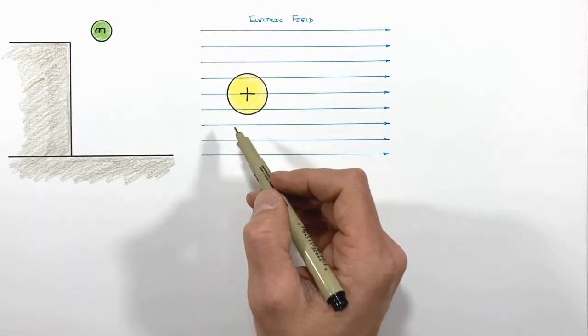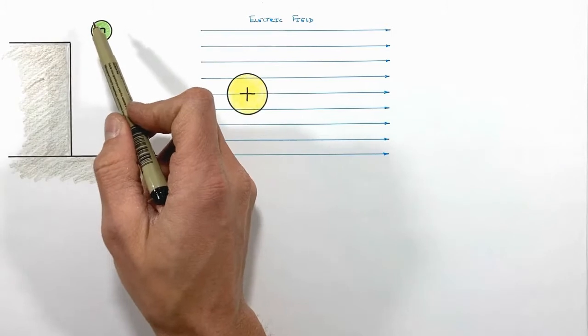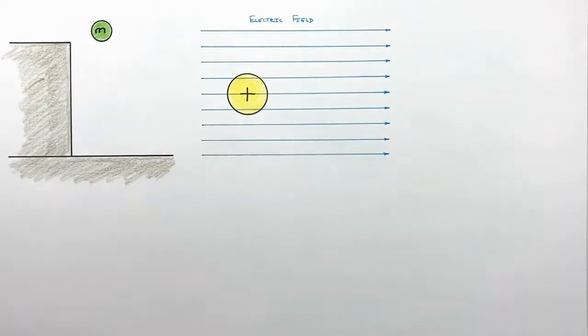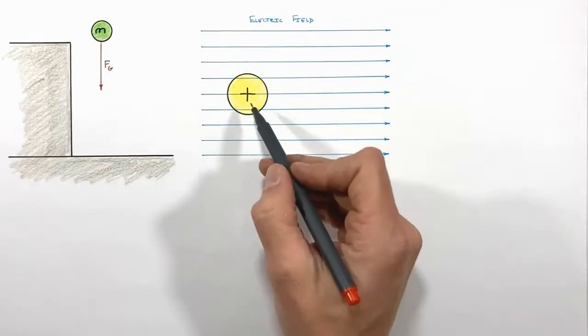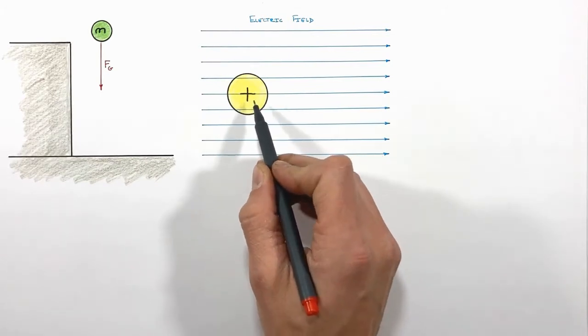Both objects are going to accelerate because of some force. In the case of our falling ball, it's gravity that makes the ball accelerate. And in the case of the charged particle, it's the electric force that's going to make this particle accelerate.